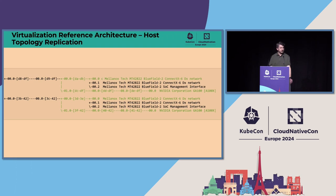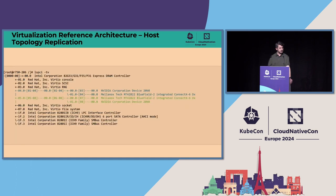This is picked up by the Kata runtime, which properly configures QEMU or any other hypervisor to enable peer-to-peer between two capable devices. The other mode is host topology replication — we're not replicating the complete host, only the main parts needed, like the two PCI switches where we know there's a Mellanox NIC and an NVIDIA GPU. We can replicate those and create in the VM the very same architecture, making it easier for the driver stack to deduce which devices can communicate together.